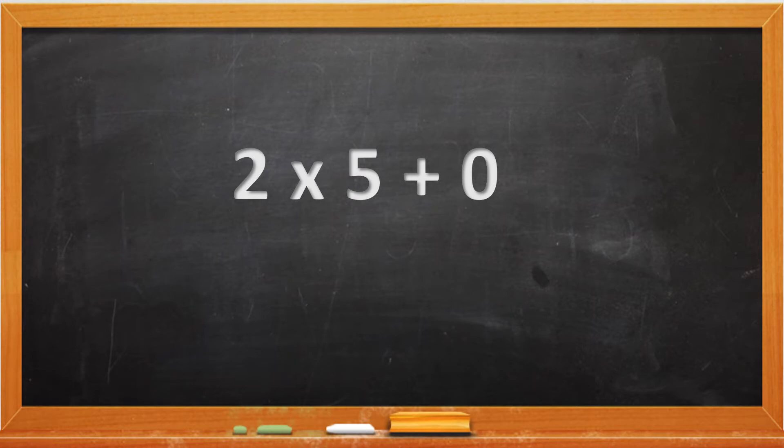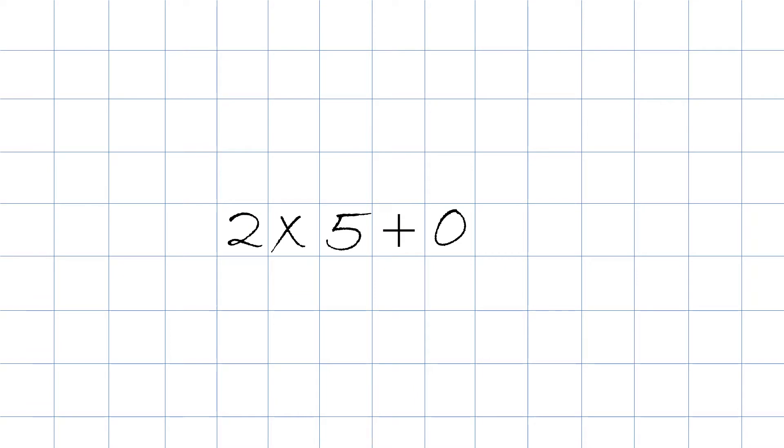In front of us we have 2 times 5 plus 0. Always get a sharp pencil, good penmanship and graph paper. Whenever we do a number sequence or a number sentence like this, there are certain rules we have to follow. Number one is we always do the parentheses. This equation does not have parentheses, we skip it.